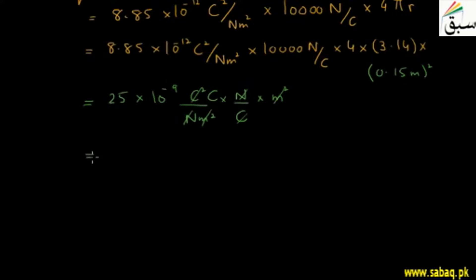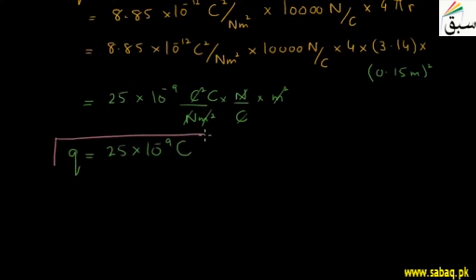The charge Q = 25 × 10⁻⁹ coulombs. This is the charge responsible for producing the electric field of 10,000 Newton per coulomb. I hope students now understand how to solve this type of problem.